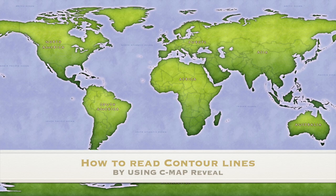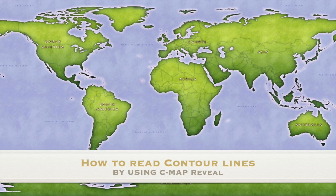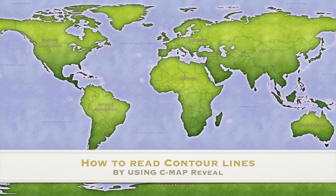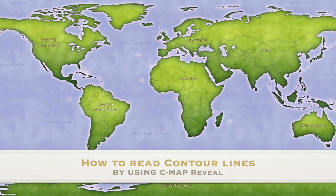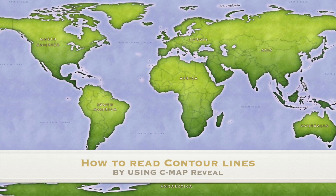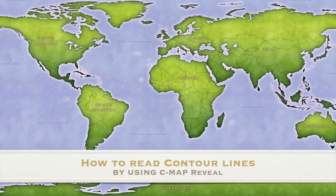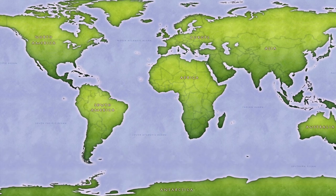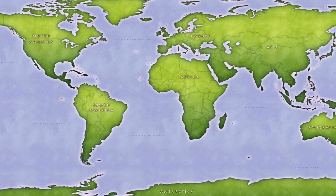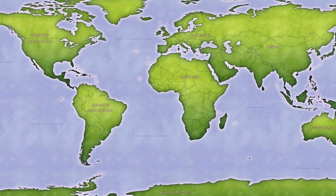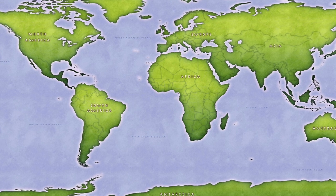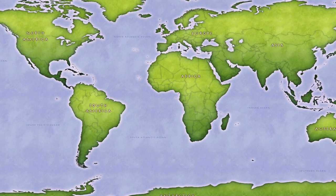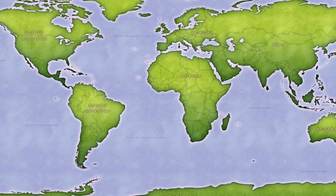The first known maps to include geographical features were found in ancient Rome. It would be thousands of years before map makers could chart large areas of terrain with real accuracy. Contour lines as we know them today became popular use in the mid-1800s.